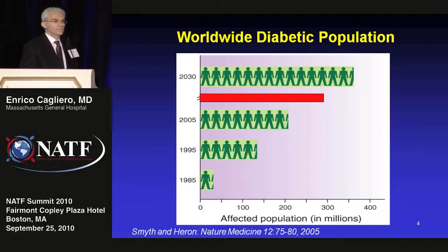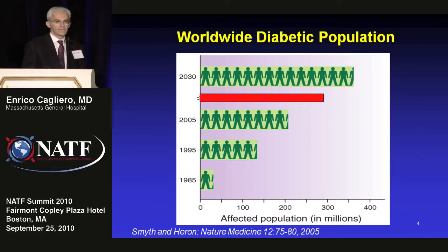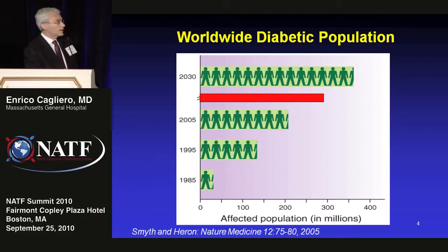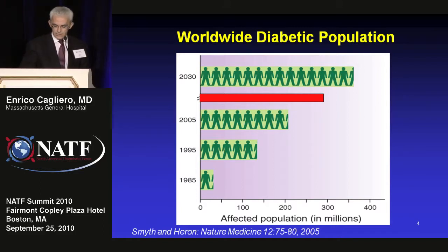Moreover, if you consider not just diabetes but all patients with impaired glucose tolerance — glucose levels not in the normal range but not high enough to qualify for diabetes — we are adding another 400 to 500 million patients worldwide, so we are reaching a billion worldwide.